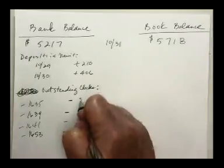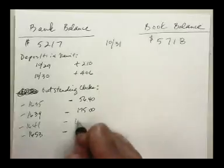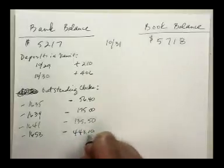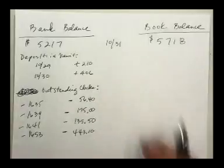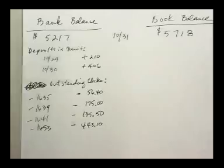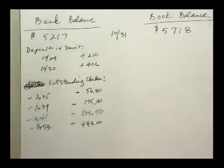The next thing the problem lists are outstanding checks. An outstanding check is one that we have written and deducted on the book side, but the bank doesn't know about them yet because they may be stuck in somebody's mail. We still need to deduct them from this balance so we can figure out other discrepancies. We had four outstanding checks: numbers 1635, 1639, 1641, and 1653. We need to deduct every one of those checks from the $5,217 bank balance: $56.40, $175, $135.50, and $443.10. There are no bank errors in this problem — so there are only three things we ever adjust the bank's balance for: deposits in transit, outstanding checks, and bank errors. There are no bank errors in this class.